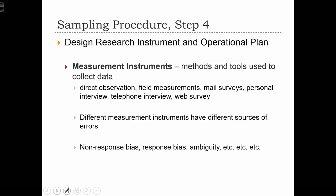Step four is to design the research instrument and the operational plan. Measurement instruments are the methods and tools used to collect the data. These include direct observation, field measurements, mail surveys, personal interviews, telephone interviews, or web surveys. Different measurement instruments have different sources of errors. For example, considering coverage bias, using web surveys would systematically exclude households without internet connections. We have to be aware of the different types of biases or errors that arise based on decisions we make regarding our measurement instruments.